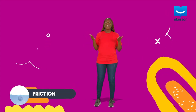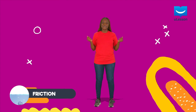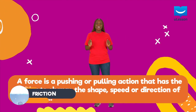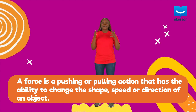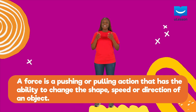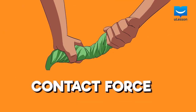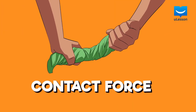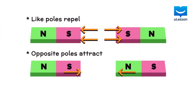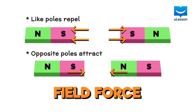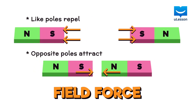Based on our previous lessons, we now know what forces are and do. We know that a force is a pushing or pulling action that has the ability to change the shape, speed, or direction of an object. If it is a contact force, like a twist, it has to touch the object to make that change happen. But if it is a field force, like a magnetic force, this change can happen even without touching the object.